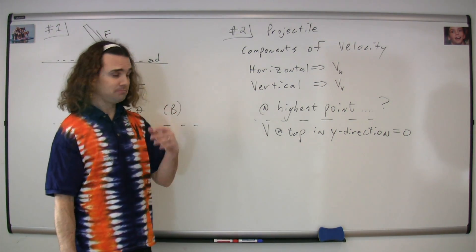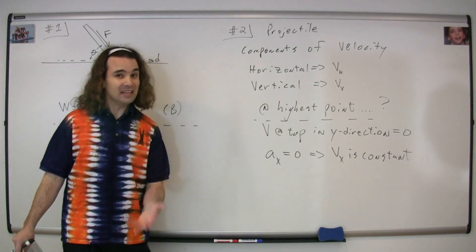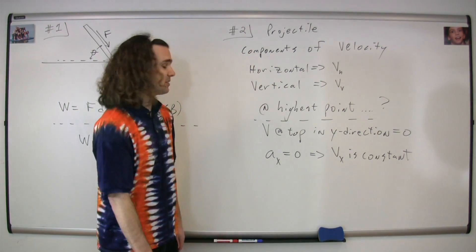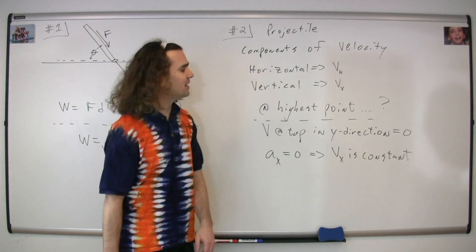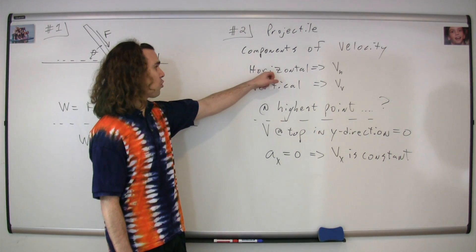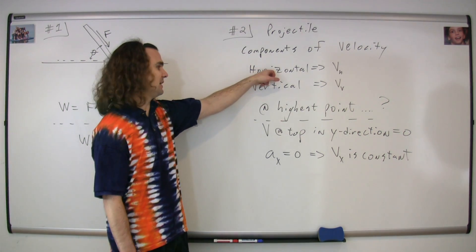In the x direction, there is no acceleration because there's no force in the x direction. Therefore, the velocity in the x direction is constant and the horizontal component will just be vh.